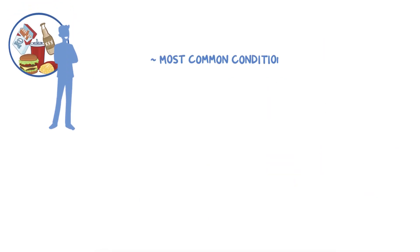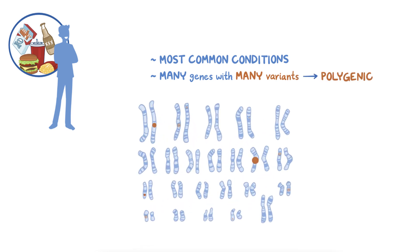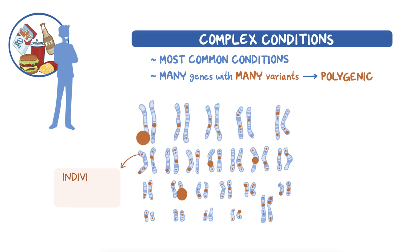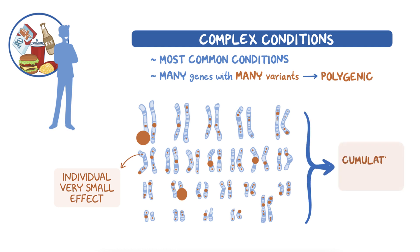On the other hand, the causes of most common health conditions are more complex and influenced not only by lifestyle and the environment, but by many different genes with many common variants. The term polygenic is used to describe the genetic component of these conditions. In complex conditions, each individual genetic variant has a very small effect, but when taken together, they can have a cumulative, measurable impact on risk.